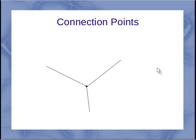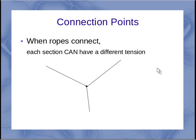What if I've got a connection point? More than one rope comes together. Well, when those ropes connect, each section can have a different tension. That doesn't mean they have to have a different tension, but they can. So my tension along each one of these segments would have a different value, or it could potentially have a different value.